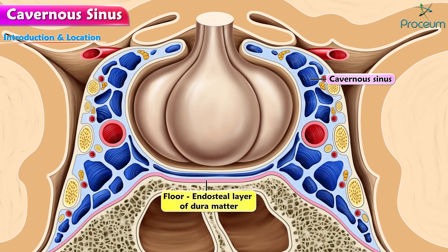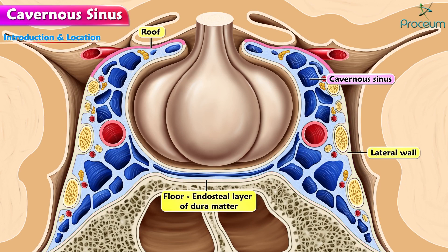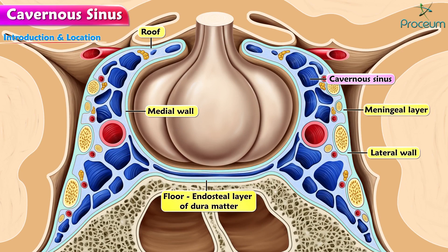The floor of the sinus is formed by the endosteal layer of the dura mater, and the lateral wall, roof, and medial wall are formed by the meningeal layer.